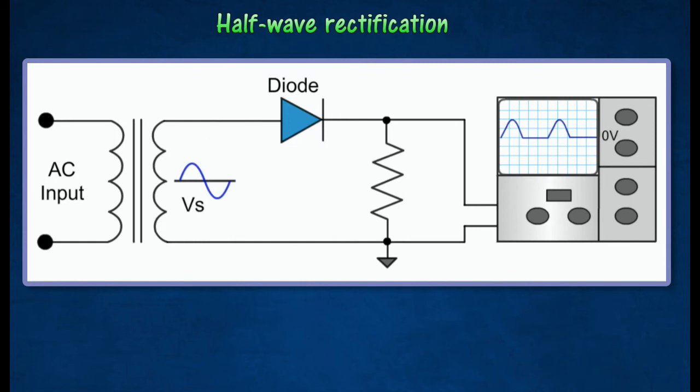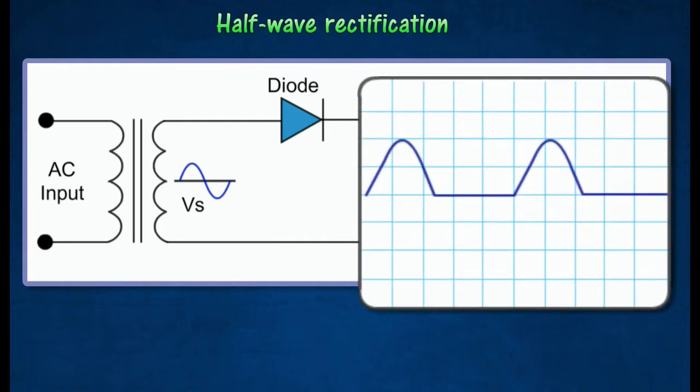The diode, which is connected in series with a load resistor, will allow current to flow in one direction only. The output voltage wave can be displayed on the cathode ray oscilloscope screen.